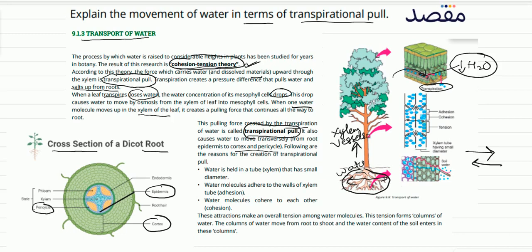There are some reasons for transpiration pull. What are the reasons? Water is held in the tube-like xylem vessels that have a small diameter. The xylem's tube diameter is very narrow. Now, you will see two processes: adhesion and cohesion.